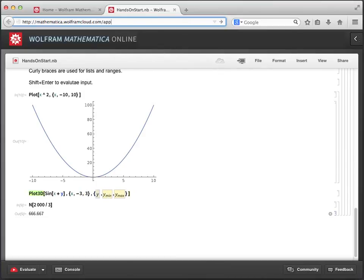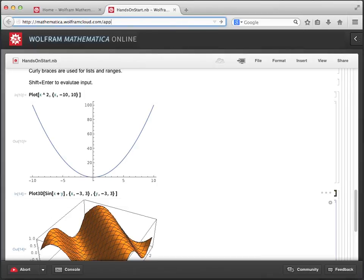And for the second set of arguments, we'll enter y, negative 3, and 3. When we evaluate, we see a three-dimensional plot of the surface of sin of x plus y.